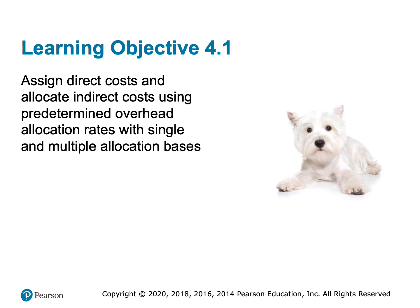Activity-based costing is not a third costing type — it's not like you choose between job order, process, or activity-based costing. Activity-based costing is an enhancement to your job order or process costing. Depending on what kind of product, service, or job you provide, that will dictate whether you have a job order or process costing system, and then you may choose to implement activity-based costing on top of that.